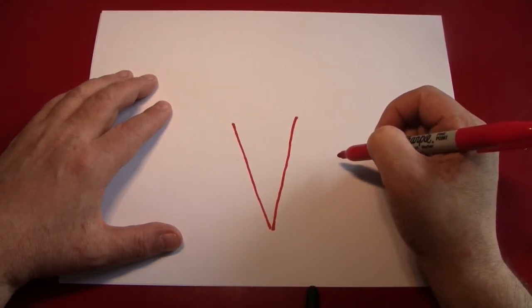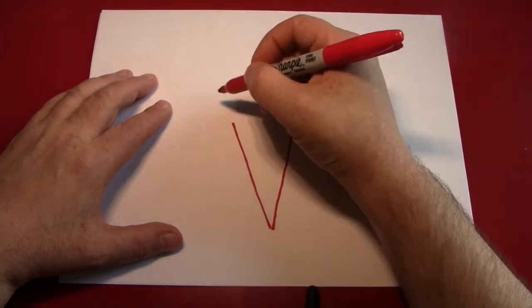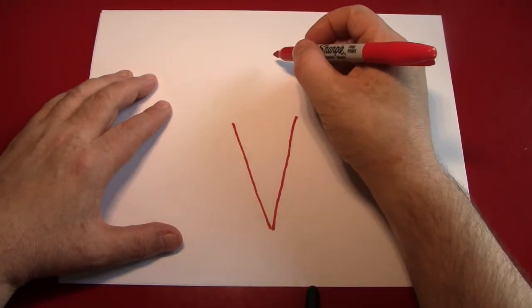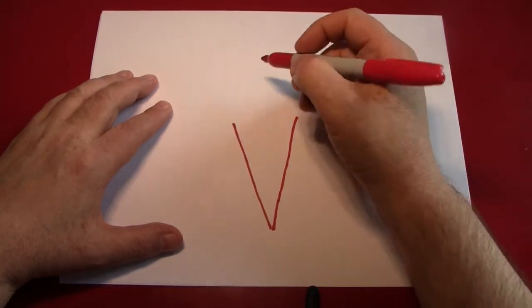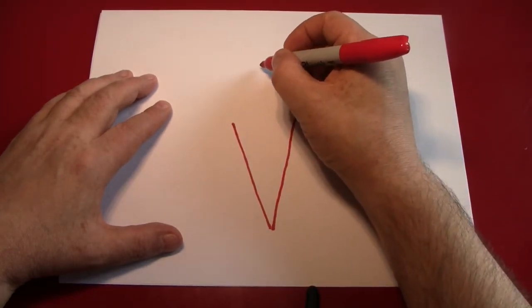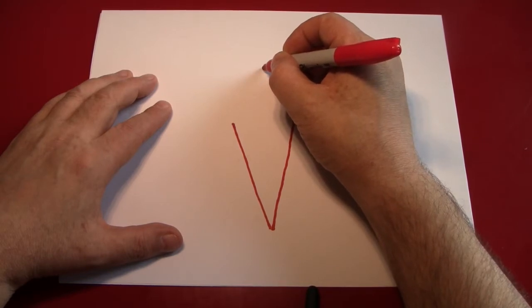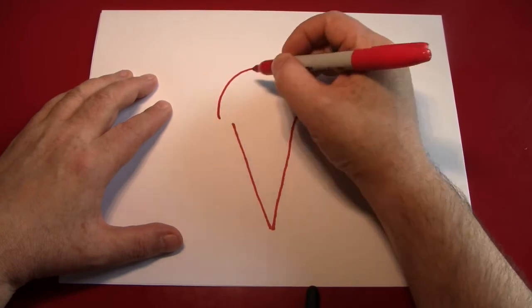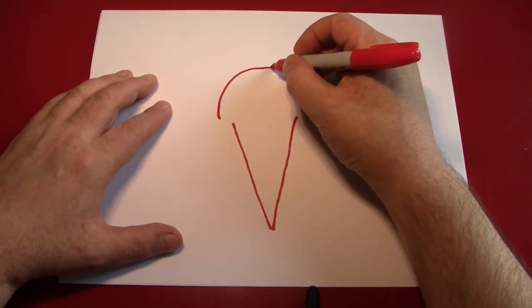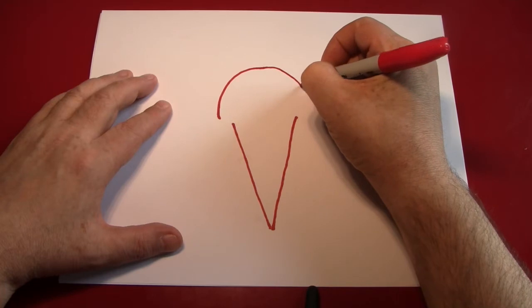Next we're going to start the ice cream part. An ice cream scoop, as you know, is a round shape because of the shape of the scoop itself. So we'll estimate that it should start about here and bring down a couple of curved lines that go out a little bit further than our cone.